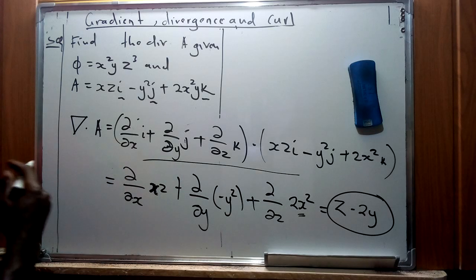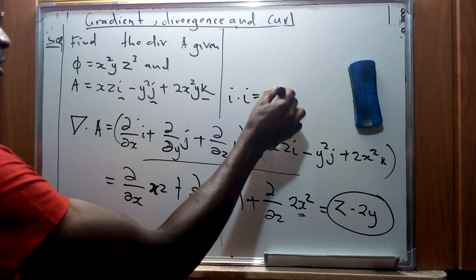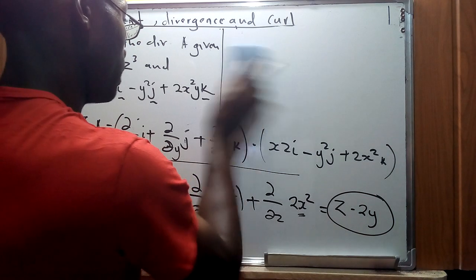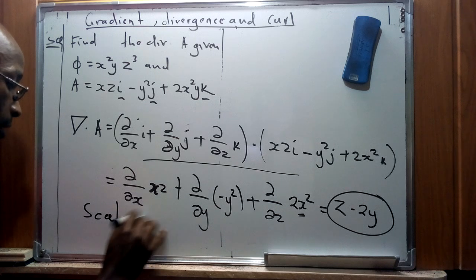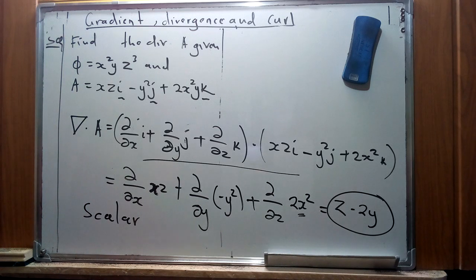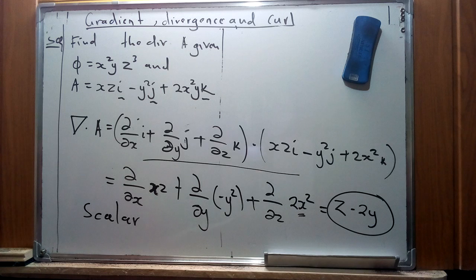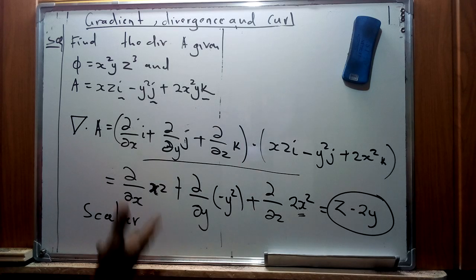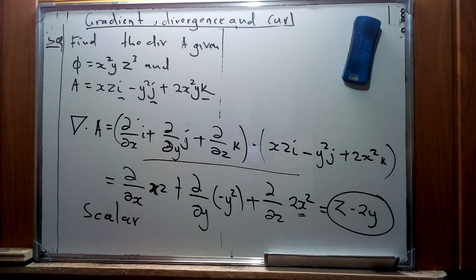By performing the dot product using the basic properties, the vectors disappear and we obtain a scalar quantity. The divergence of A is z minus 2y. This is the procedure to follow, and you can apply the same method to similar equations you may encounter. That's all for today — God bless.